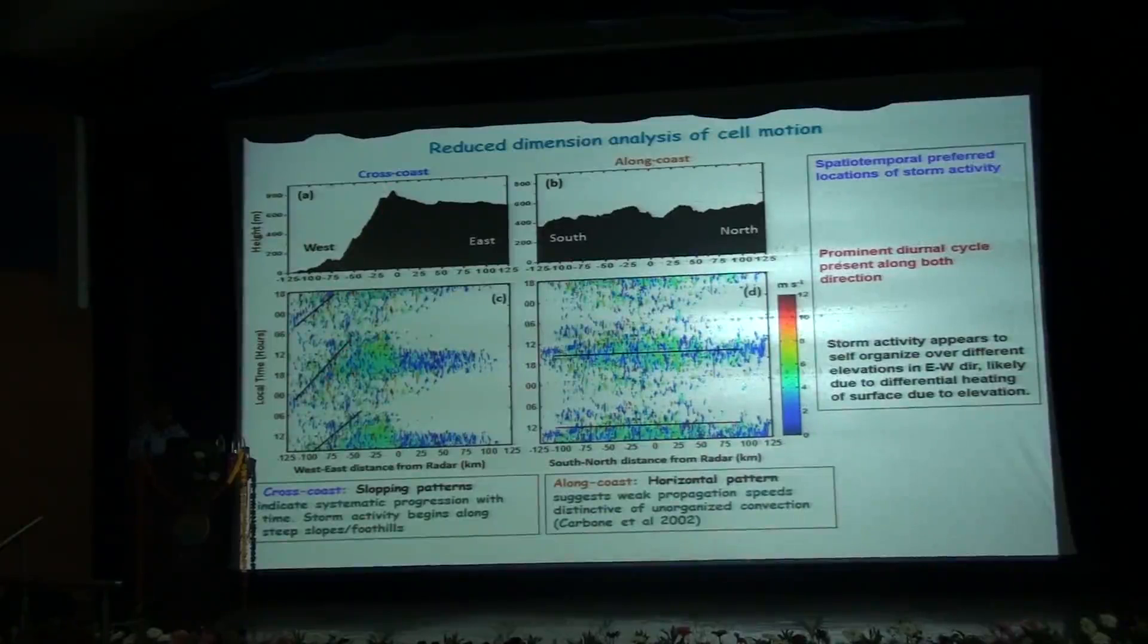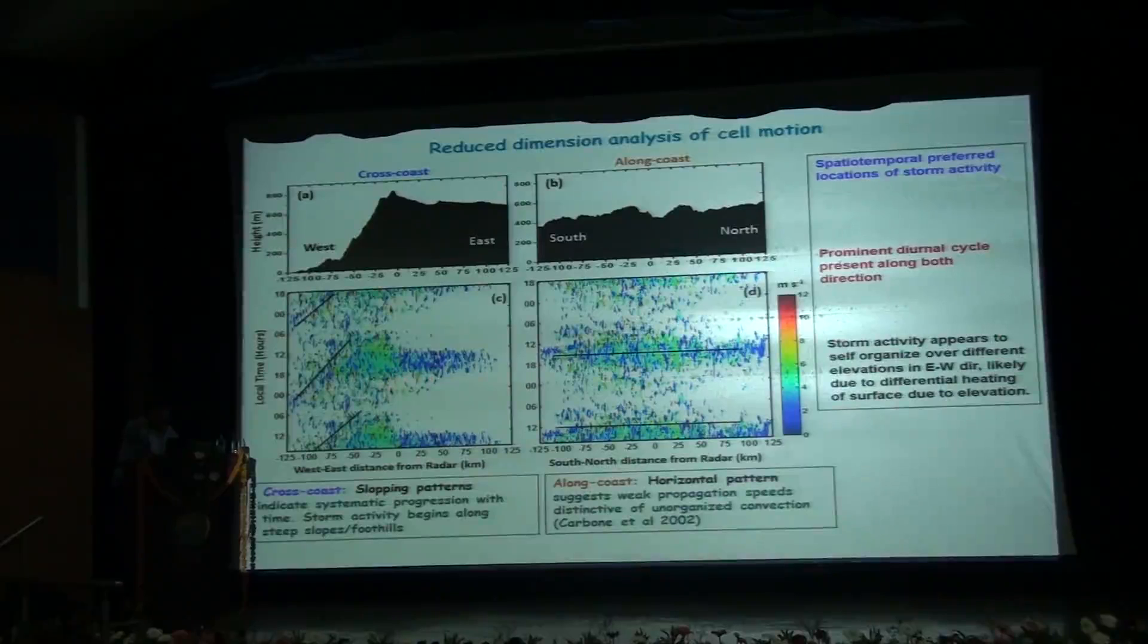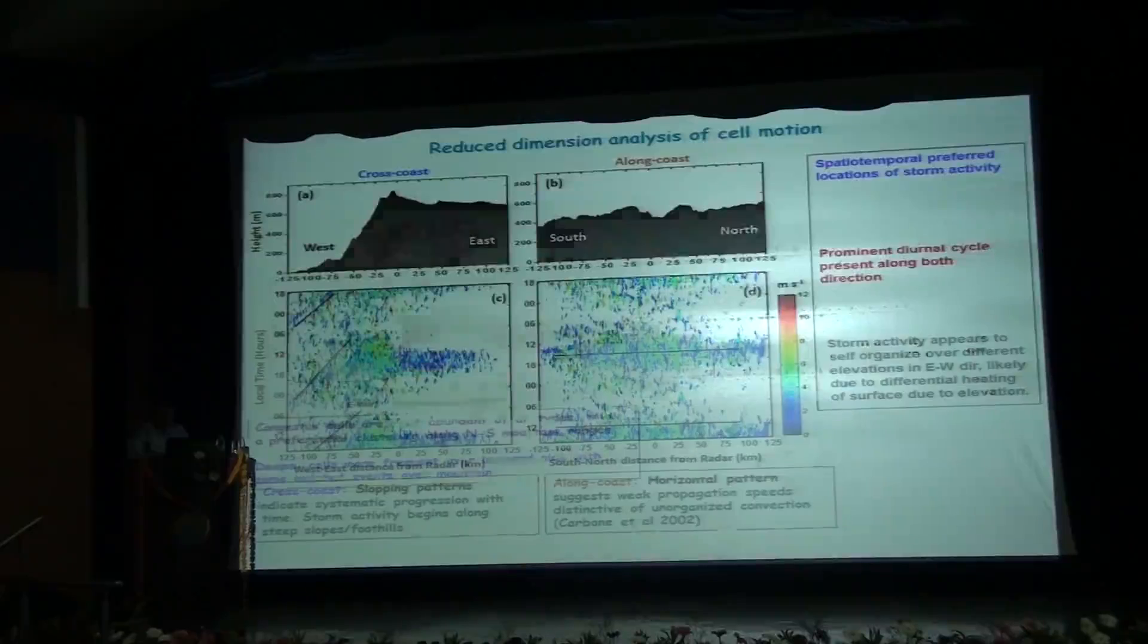Thus the storm activity appears to self-organize over different elevations in the east-west direction, likely due to differential heating of the surface due to differences in elevation. Whereas in the along-coast component, the horizontal patterns are flat suggesting weak propagation speed distinctive of unorganized convection. So we see that a spatio-temporally preferred location of storm activity and a prominent diurnal cycle is present in both cross-coast and along-coast dimensions.